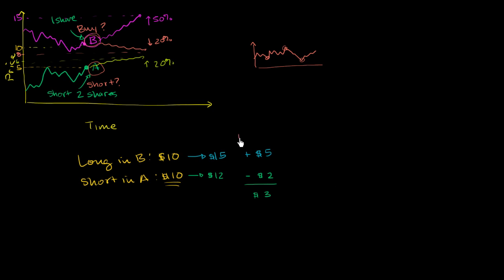So this is the market up scenario. Now let's imagine the market down scenario. Market down. So now my position in B goes from $10 to $8. So I lose $2 on my long position.